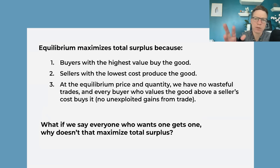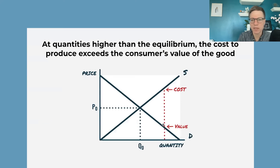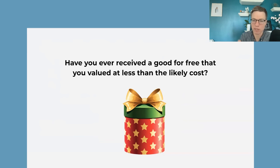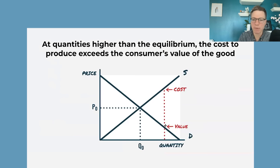Why is there not some other equilibrium that maximizes total surplus? Like, why not give everyone who wants the good one? Well, not necessarily, because you may want the good — you may have a positive value to it — but at that high level of quantity, the cost of producing it may be above its value. Just as an anecdote: if you ever got something for free and thought, it's nice to have this but I probably don't value it at the cost — my son got a happy meal today and played with the toy for like three seconds. He got some positive value from it, but probably not at the cost of that toy. So just giving everybody who wants one may be a waste if their value is less than the cost. That's why we like the equilibrium quantity: only positive-sum transactions where the value is higher than the cost.